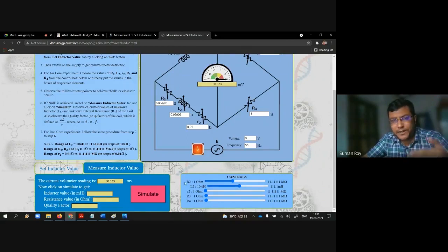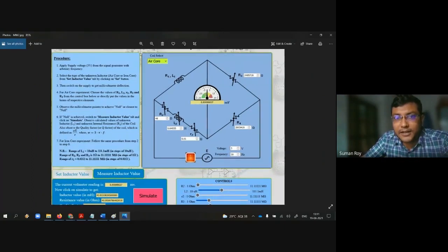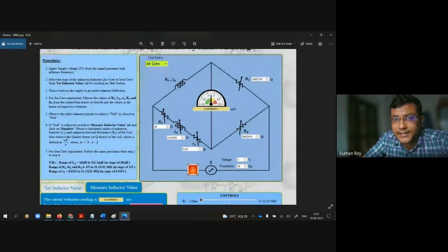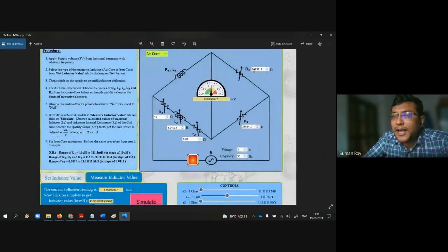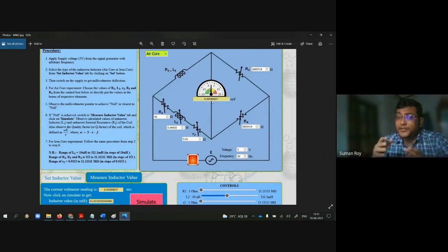You have to find out the null position. Without wasting time, I have taken two such readings. For air core, as you can see, these are the experimental values. For this R3, R2, L2, and R4 value, we are getting almost a null position, that is 0.00099837. I think it is quite enough, close to null position.